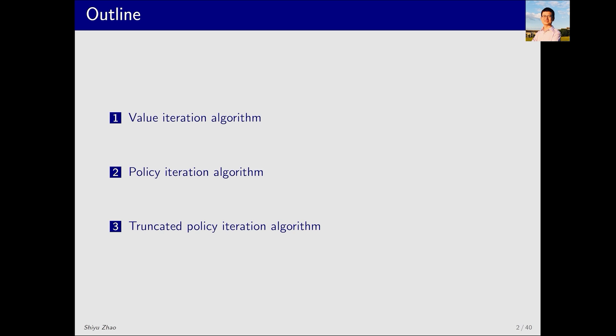This lecture covers three algorithms. First, value iteration. Second, policy iteration. And third, truncated policy iteration. Later, you will see that the three algorithms are closely related. In fact, value iteration and policy iteration are two extreme cases of truncated policy iteration. This will become clear later.